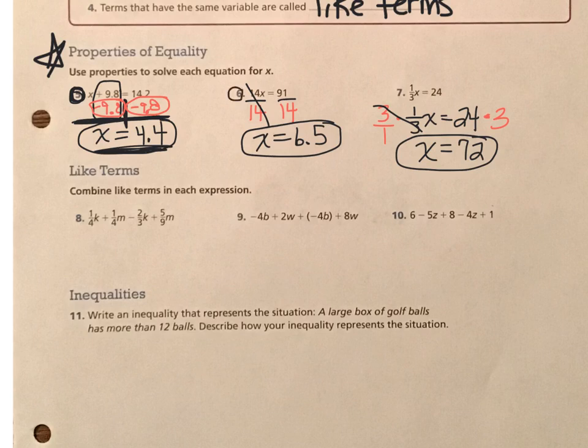Now let's move on to number six. Number six says 14x equals 91. Because the 14 and the x are multiplied together, you have to use the inverse operation of multiplication, which is division.